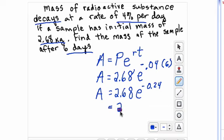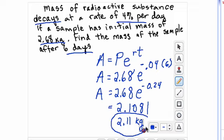So you plug this in and you're going to get 2.1081. And so if it asks you to round to the nearest two decimal places, we're going to need to decide if this 0 rounds up to 1. And you look to the number on the right, and it's bigger than 5. So it's going to be 2.11. And these are kilograms. So after 6 days, it is now only 2.11 kilograms of substance.